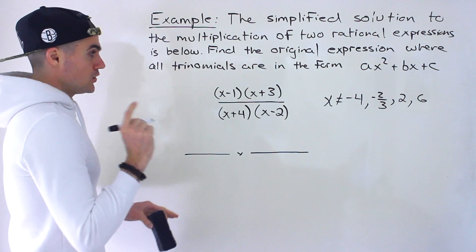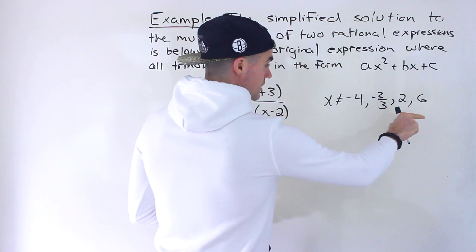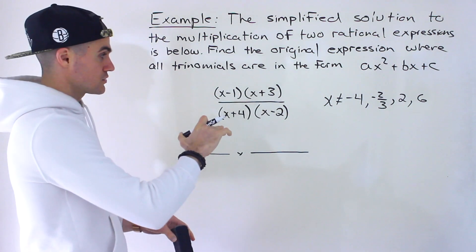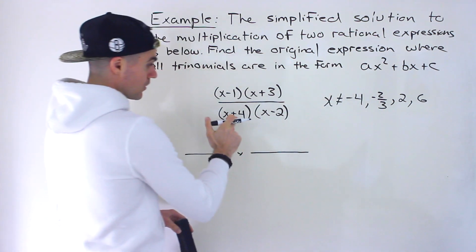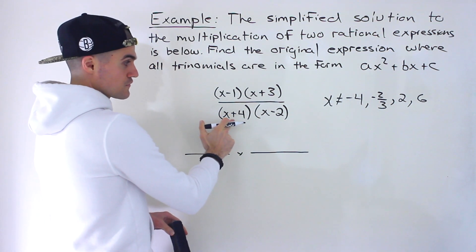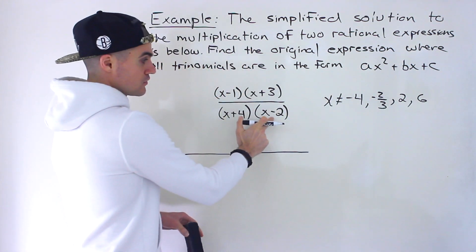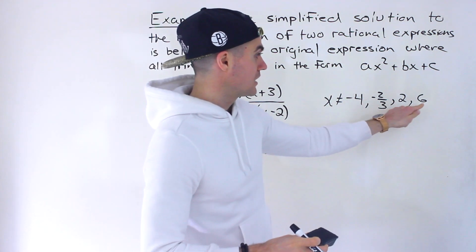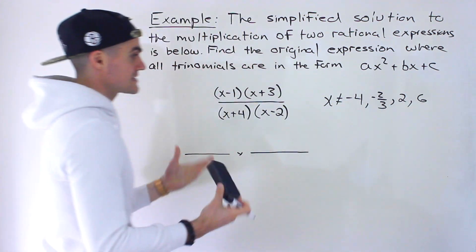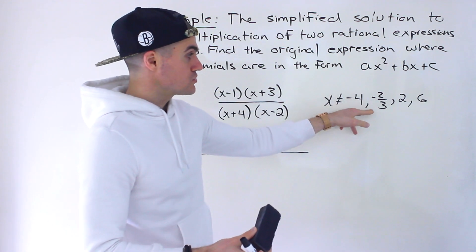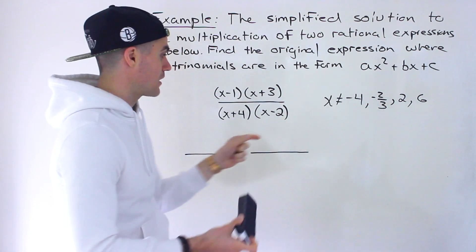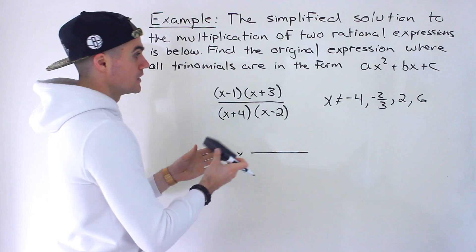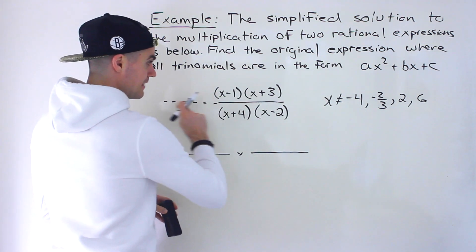Notice that there are four restrictions but only two factors in the denominator of the simplified solution. The restriction x can't be negative 4 comes from one factor, and x can't be 2 comes from the other. But there are two additional restrictions — x can't be negative 2 over 3 and x can't be 6 — which means those came from factors that were in the denominator before but got canceled out. So if we expand this fraction...